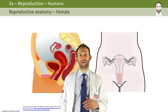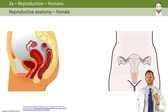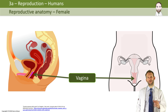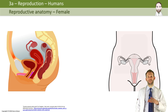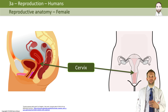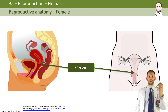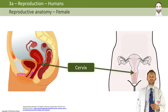So let's start off with the female. The first structure to look at is the vagina. The vagina is used for sexual intercourse — the sperm are deposited there. The cervix is at the neck of the vagina, at the top, and it separates the womb — the uterus — from the vagina. It is a ring of muscle which holds the baby in the uterus during pregnancy.